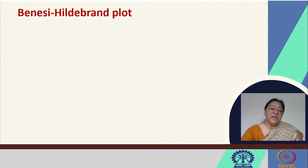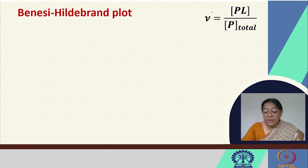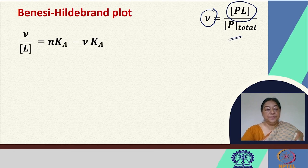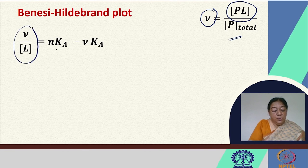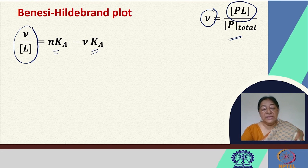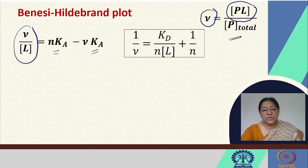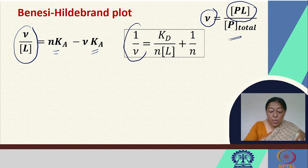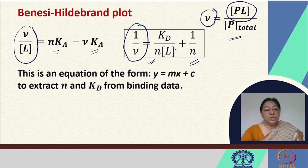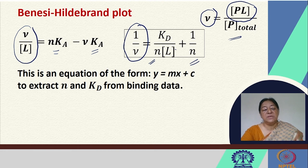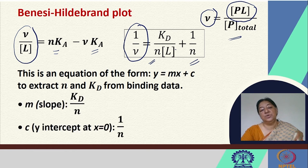Another commonly used linearization is the Benesi-Hildebrand plot, where the definition of nu as protein-ligand complex over total protein is rearranged to give 1/nu versus 1/L. This is of the form y equals mx plus c, from which we can extract the number of binding sites N and the dissociation constant KD from experimental binding data. Specific examples will be solved in the discussion class.